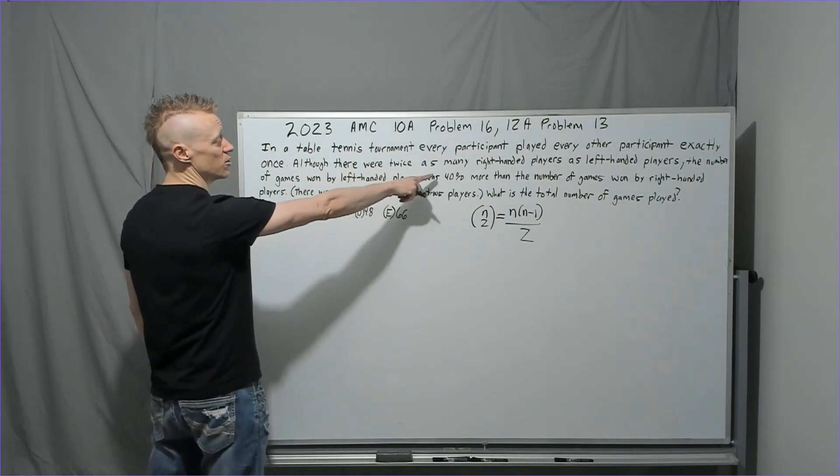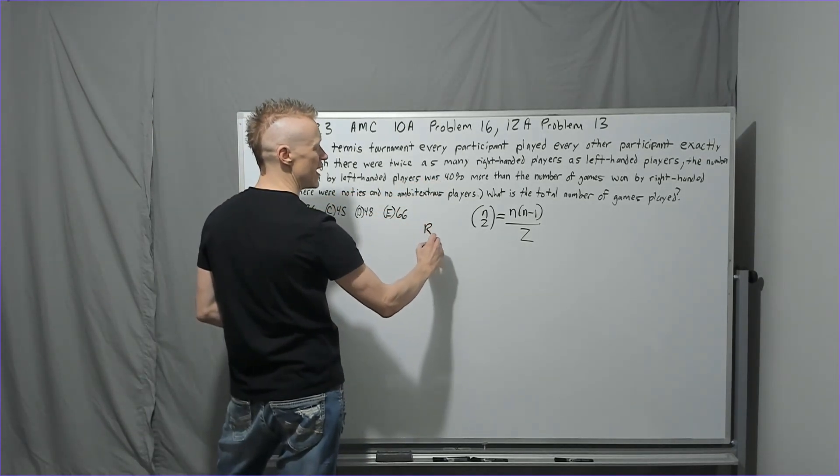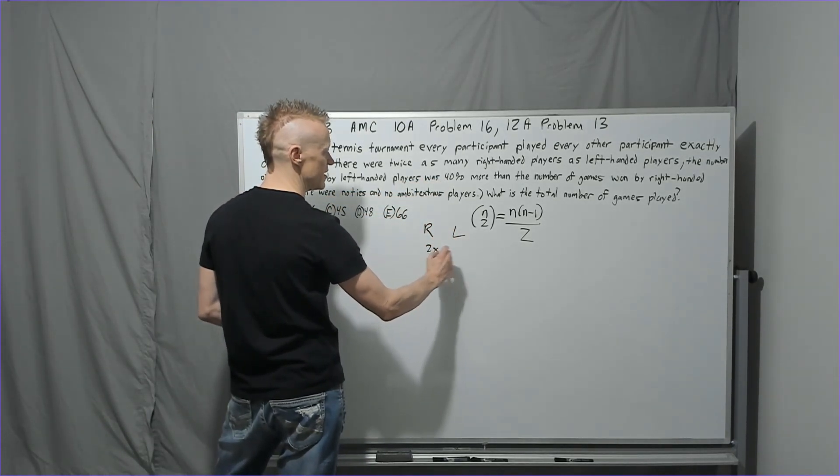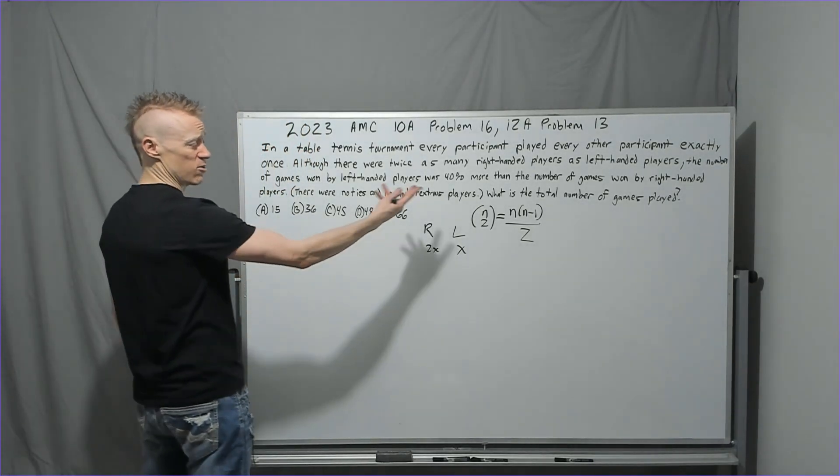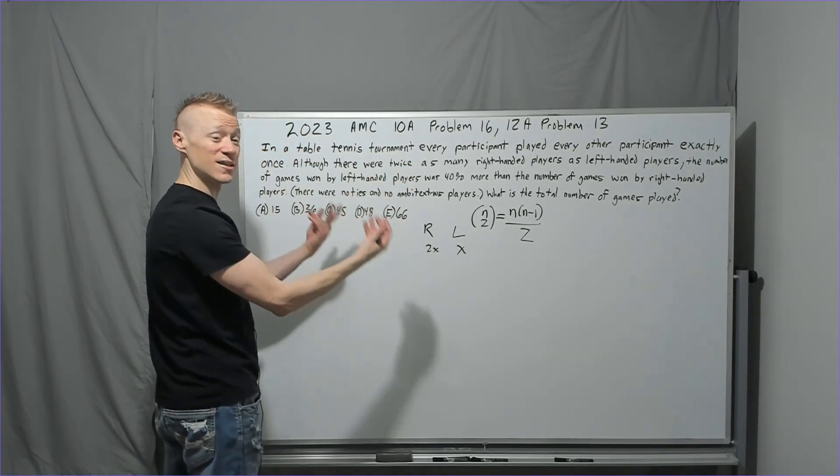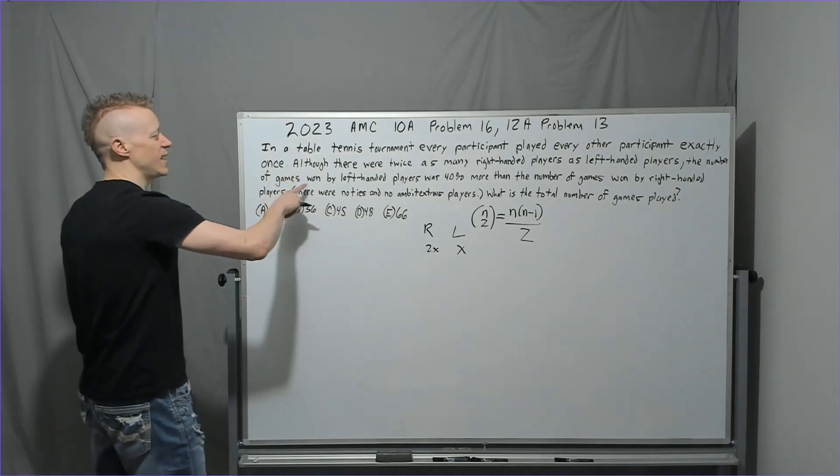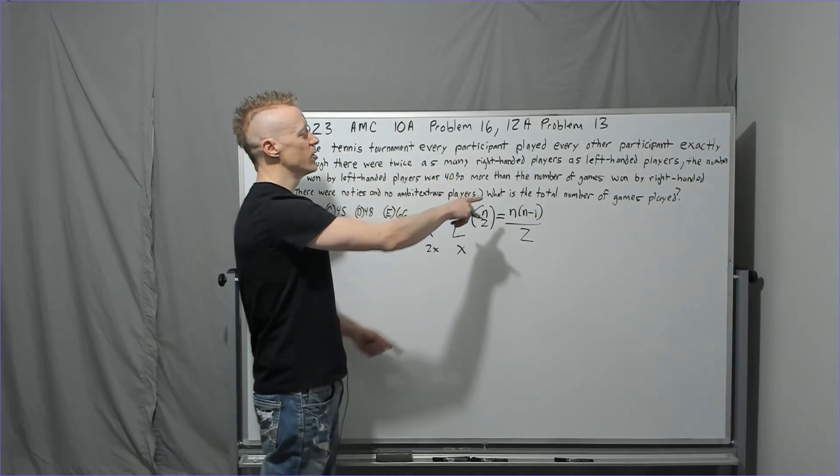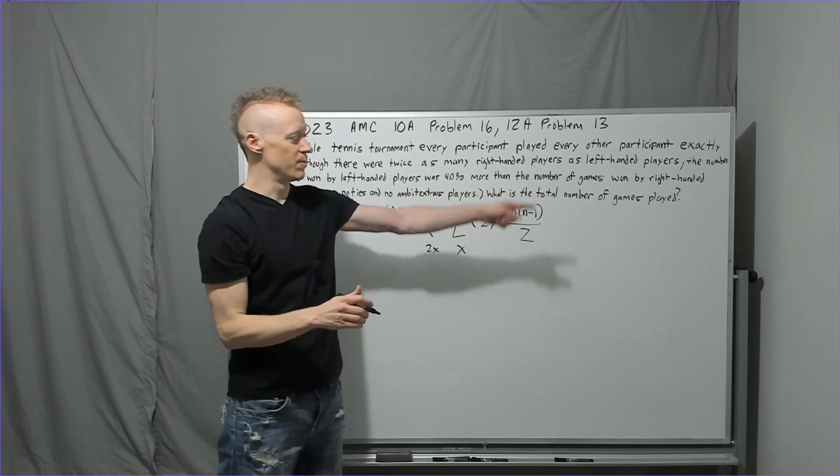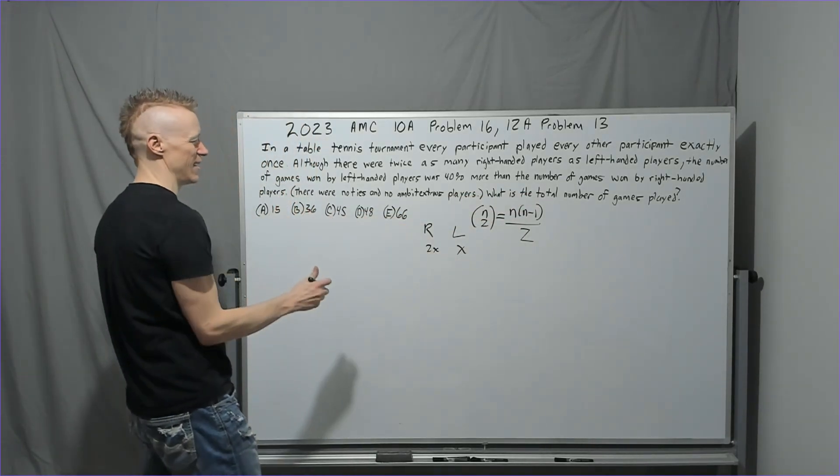Although there were twice as many right-handed players as left-handed players, maybe 2X and X, some kind of representation of the information so you can think about it. The number of games won by left-handed players was 40% more than the number of games won by right-handed players.